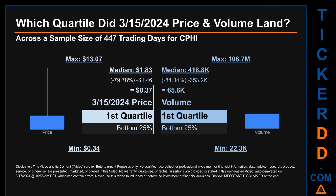Quartiles tell us about the spread of a data set by breaking that data set into quarters, just like how the median breaks the set into half. Descriptively, CPHI has a median price of $1.83. Therefore, March 15, 2024's price was lower than that middle marker by 79.78%. The day's volume of 65,600 was less than the median by 84.34%.